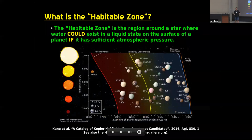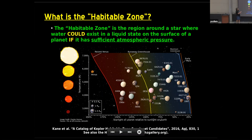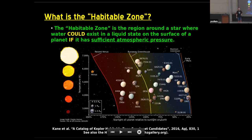Let's go to the definition of the habitable zone. Many of you would have heard people say we're looking for water — sometimes 'follow the water.' But the way it's really defined is: it's a region around the star where water could exist in a liquid state on the surface of the planet if it has sufficient atmospheric pressure. Many people leave the atmosphere part off of that, and that is of course a mistake. Because the atmosphere is our measurable — that is what will inform us about what's actually going on at the surface.